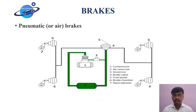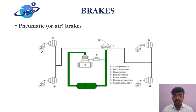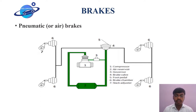Next we look at the third type, that is pneumatic brakes or air brakes. The entire working principle is the same as hydraulic brakes, so we are directly concentrating on the components used in pneumatic brakes. The components are: first, air compressor; second, reservoir; third, governor; fourth, brake valve; fifth, foot pedal; sixth, brake chamber; and seventh, slack adjuster. The air compressor works by forcing air into a container and pressurizing it.